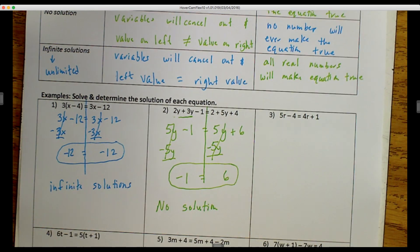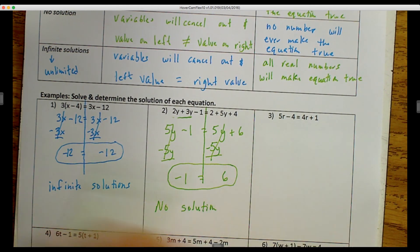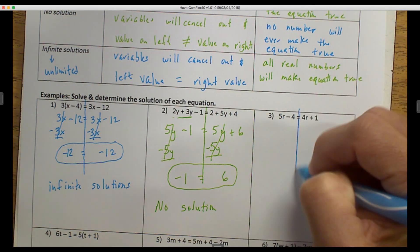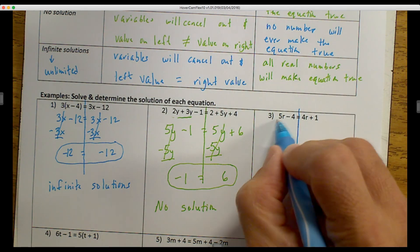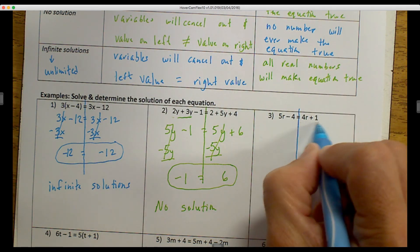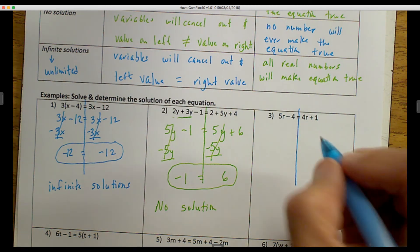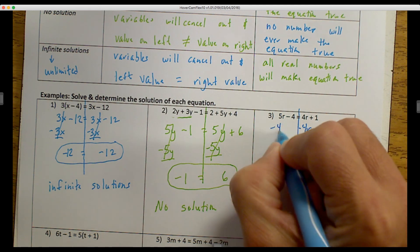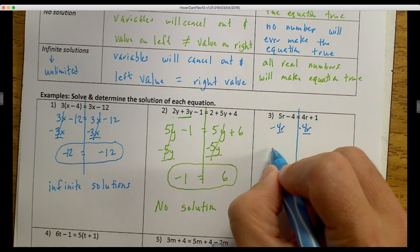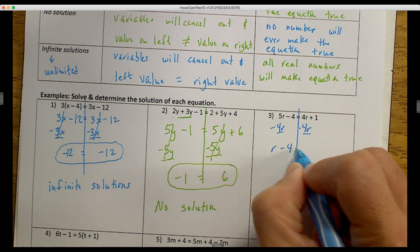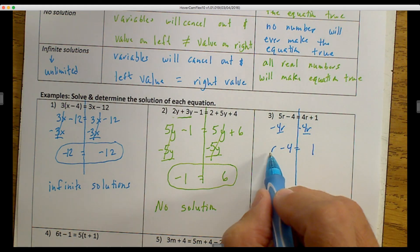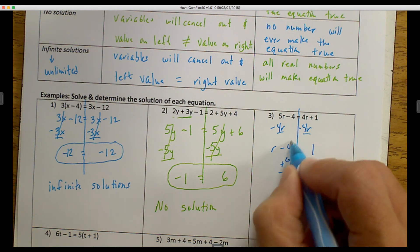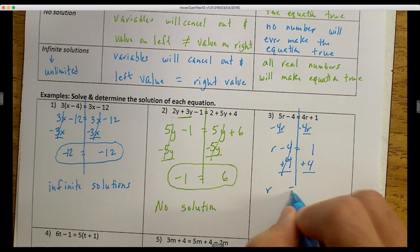In the last example, again, I'm going to identify where the middle of my equation is. And then I'm going to notice that I don't have any like terms, and I can't distribute, there's no parentheses. So I'm going to isolate my variable. I'll subtract 4r from here, subtract 4r from there, and then I get r minus 4 is equal to 1. And then I want to get my r by itself, so I add 4 and add 4, and these cancel out, and I get r is equal to 5.